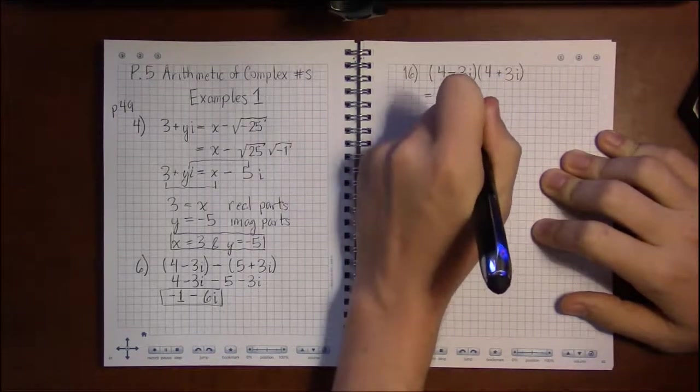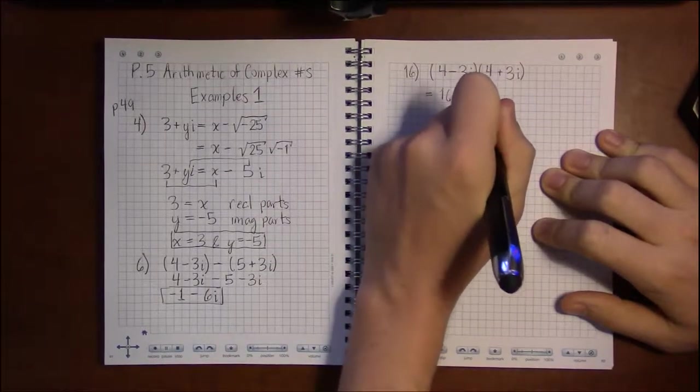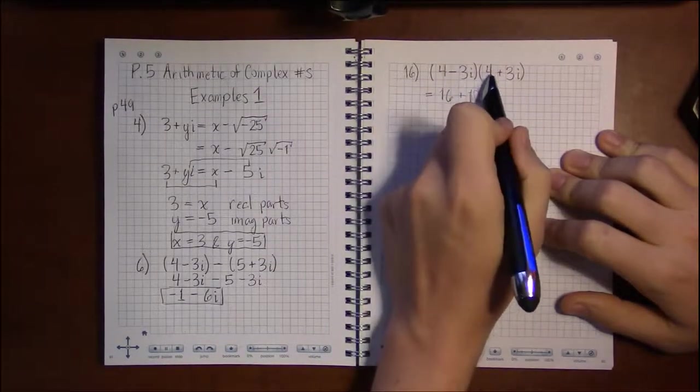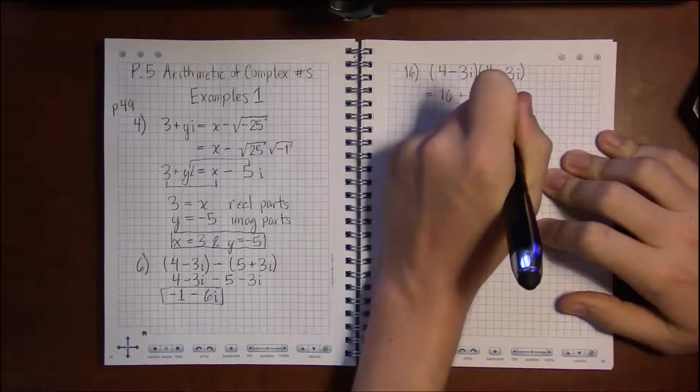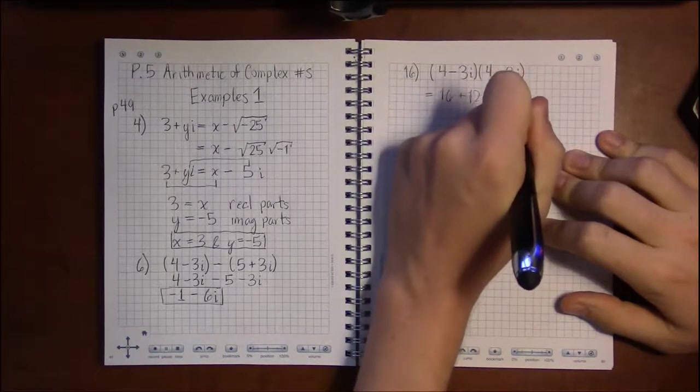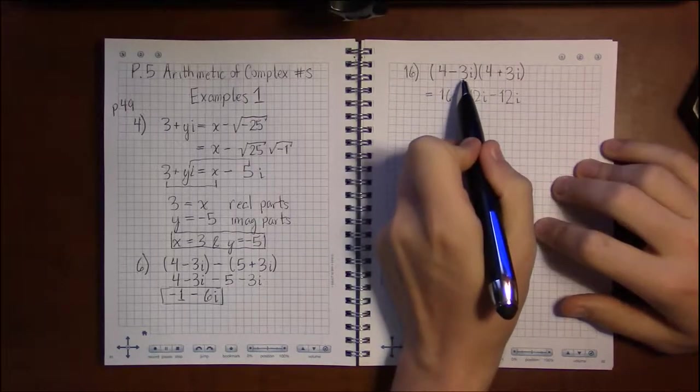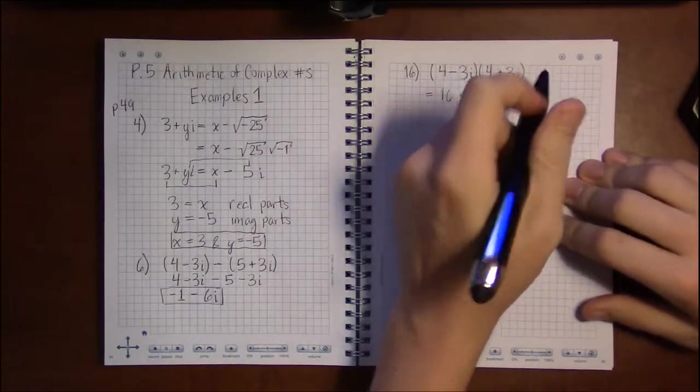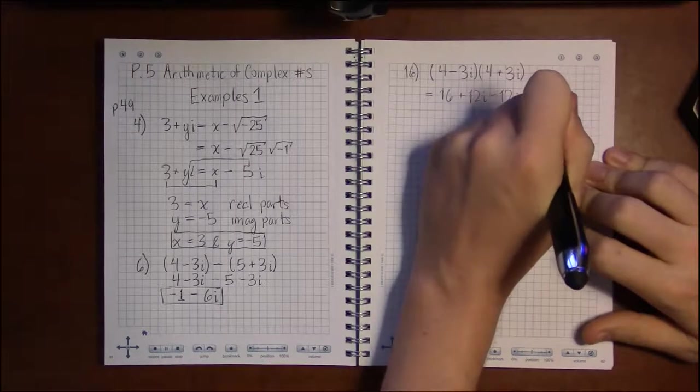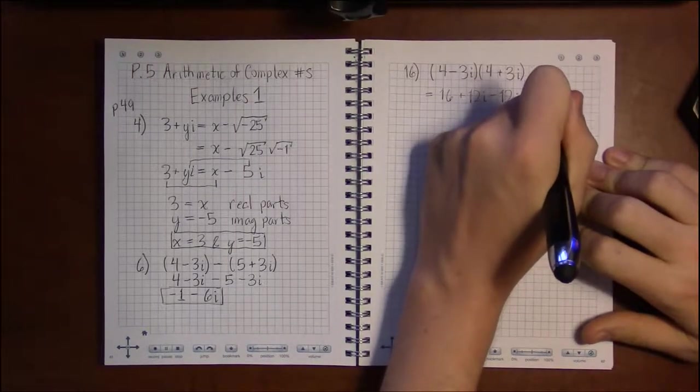So 4 by 4 is 16, 4 times 3i is 12i, minus 3i times 4 is minus 12i, then minus 3i times plus 3i is minus 9 i squared.